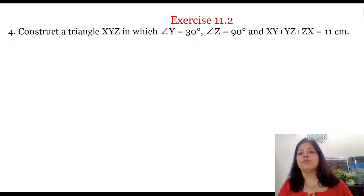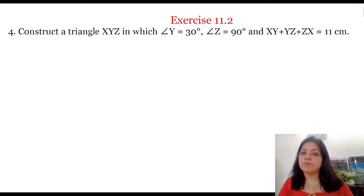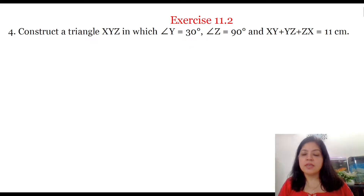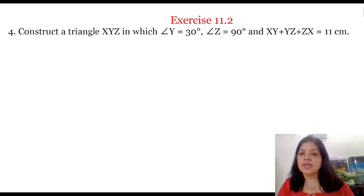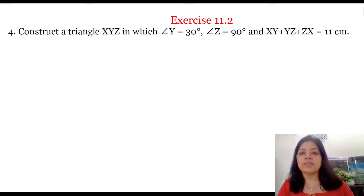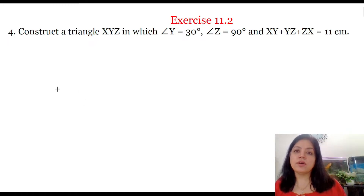Hi, I'm Hema and in this video I'm going to do question number 4 of Exercise 11.2 in NCERT class 9th mathematics. The question is: construct a triangle XYZ in which angle Y is equal to 30 degrees, angle Z is equal to 90 degrees, and the sum of the three sides — that is XY plus YZ plus ZX — is equal to 11 centimeters. Let us draw a rough figure.